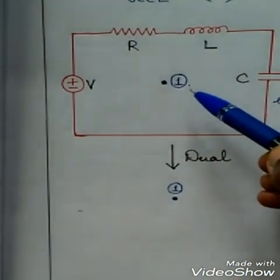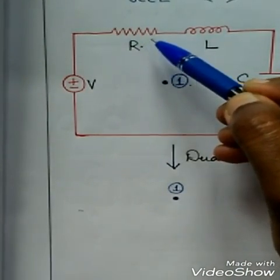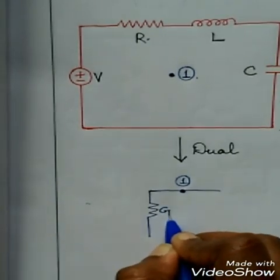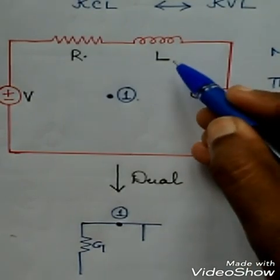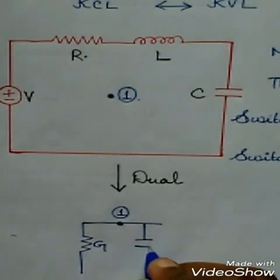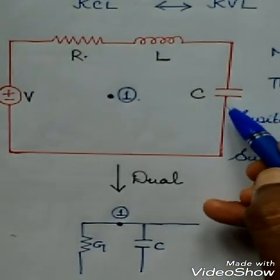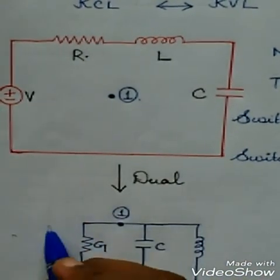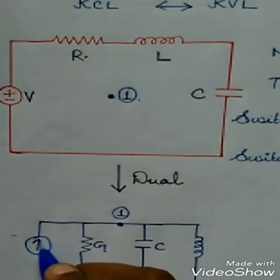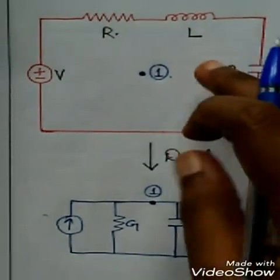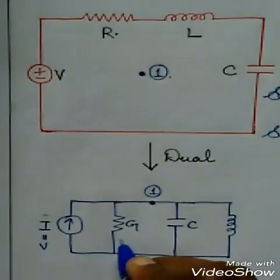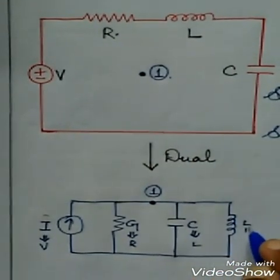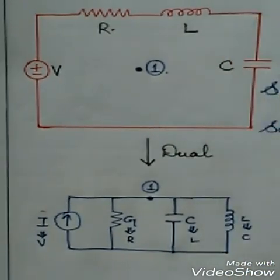All elements have an equal dual term that has to be marked in parallel. In this particular mesh, the first element is a resistor. The dual term of resistance is conductance, so first mark the value of conductance G in this node. The second element is inductance — the dual term of inductance is capacitance, so mark it as C. Then the dual term of capacitance is inductance, so mark the value as inductance L. Finally, the voltage source's dual term is a current source — the direction remains the same.